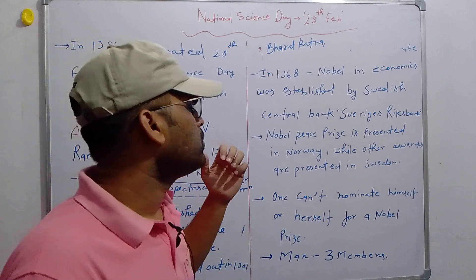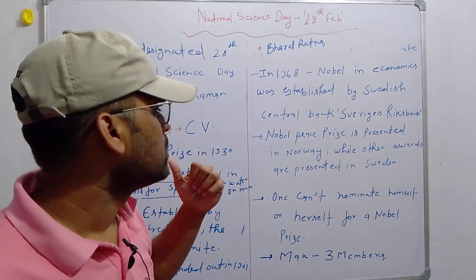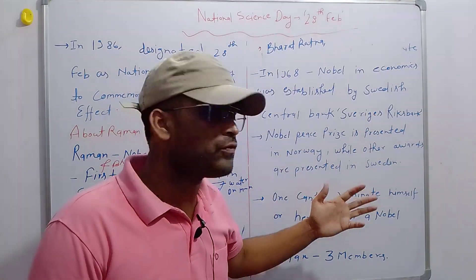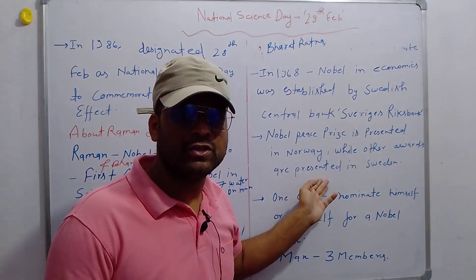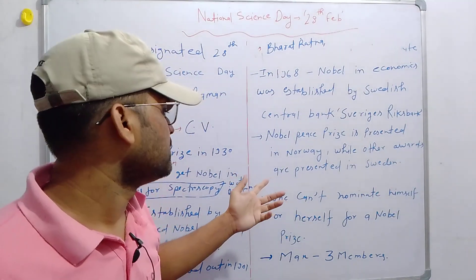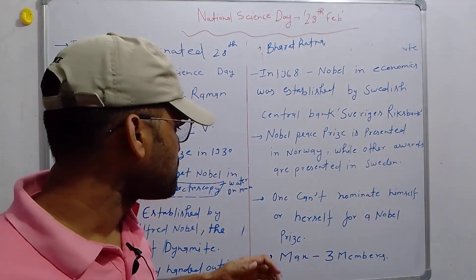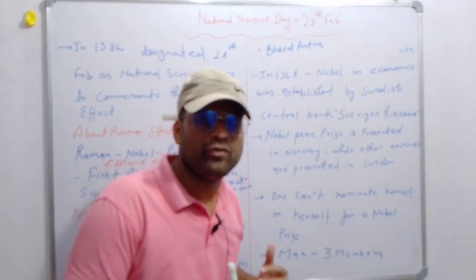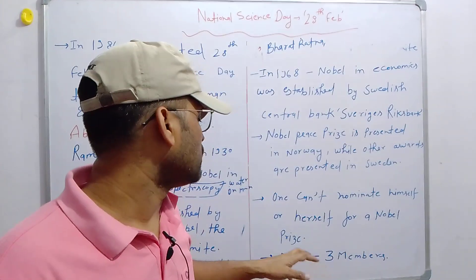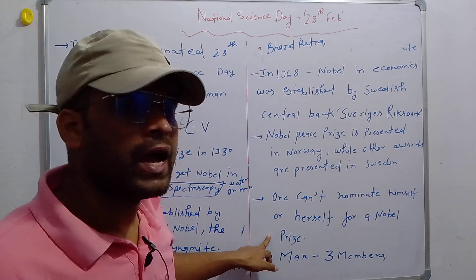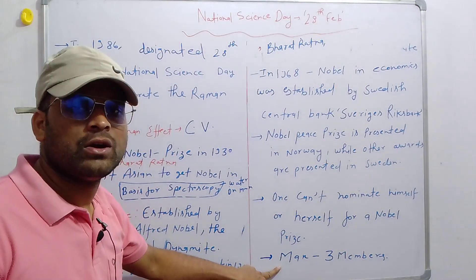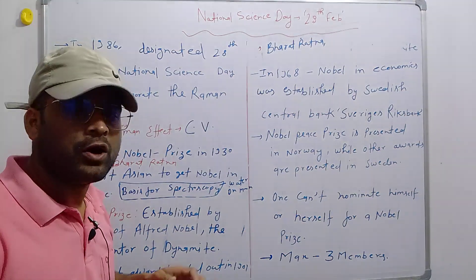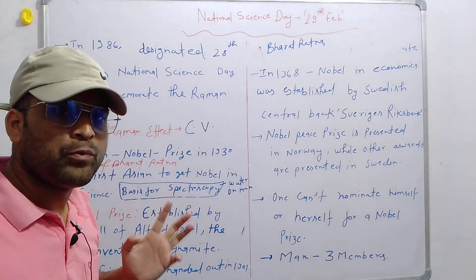When you talk about the Nobel Peace Prize, it is presented in Norway, and the rest of the awards are presented in Sweden — that is the difference. One cannot nominate himself or herself for the Nobel Prize, and in each category, a maximum of three people can be given the prize.